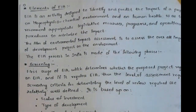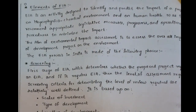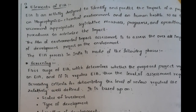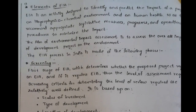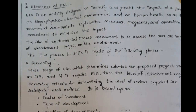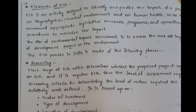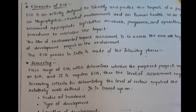The first element is the screening process. In the screening process, it is determined whether environmental impact assessment is required or not for the proposed project. Screening is based upon the scale of investment, the type of development, and the location of development — near forest areas, near terrain areas, near agricultural lands, near social communities, or chemical industries.